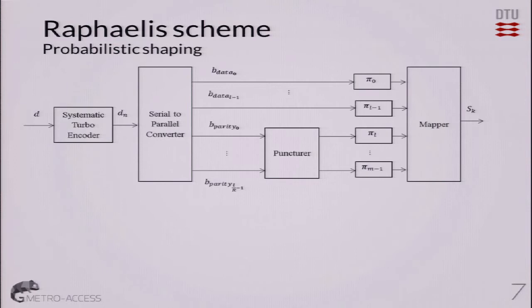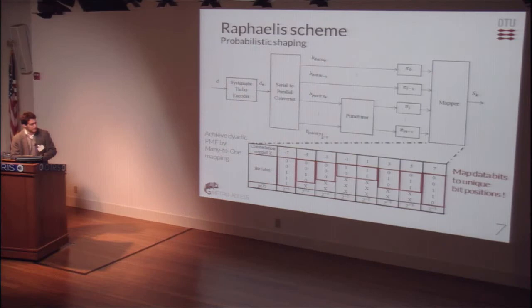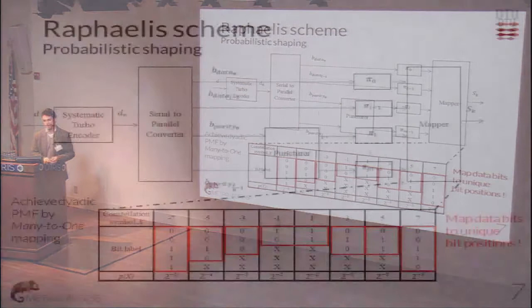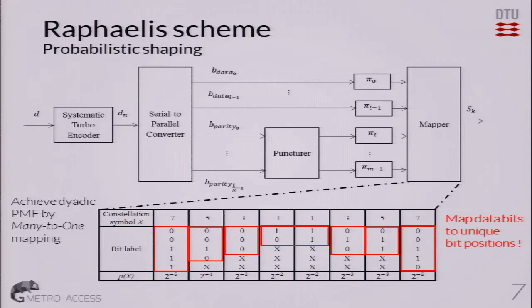The Raphaël scheme consists of a systematic turbo encoder, which is used to iteratively resolve the ambiguities that we are inducing at the receiver, and also a serial-to-parallel converter with as many lines as bits per symbol, a puncturer, an interleaver, and the key of shaping — the mapper. In this simple example, we have eight symbols, like an 8-PAM, and each symbol is assigned five bits instead of three as we would expect. These two spare bits allow us to induce ambiguities and thereby shape our constellations according to what the Blahut-Arimoto algorithm tells us. This way, we create dyadic probability mass functions through many-to-one mapping.